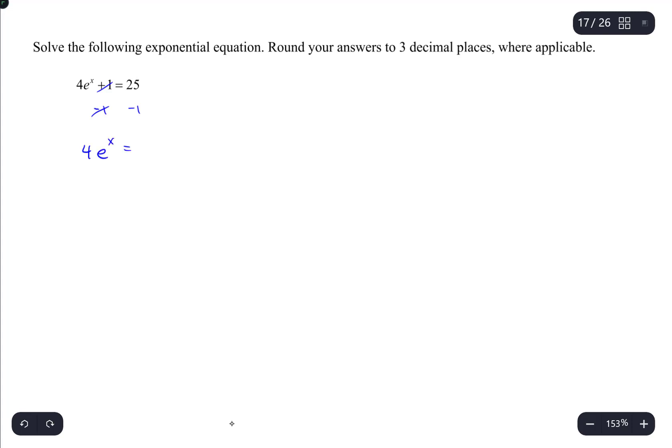Then I have 4e to the x equals 24. Next I can divide both sides by 4 to get rid of this constant, which leaves me e to the x equals 6.